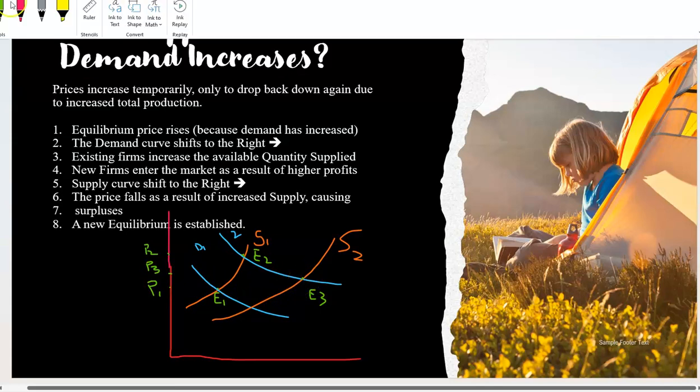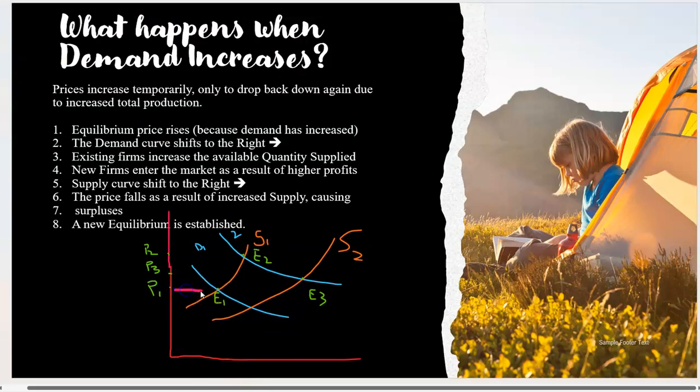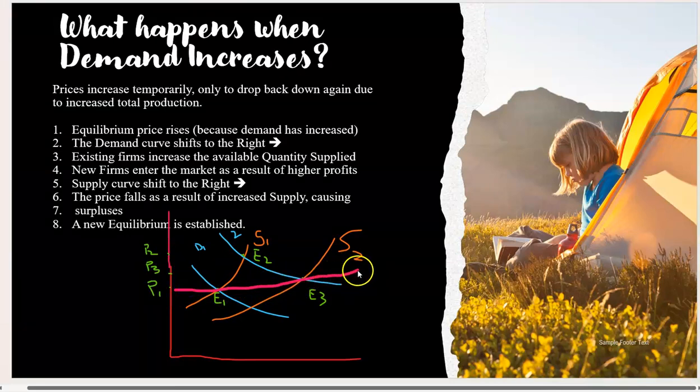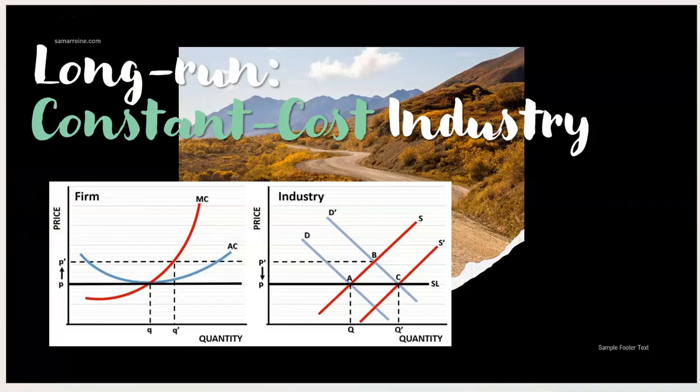So now we have something called the long-run supply curve. The long-run supply curve is going to run from equilibrium one to equilibrium three. So you see how it's upward. It's moving up. When you go from equilibrium one to equilibrium three, equilibrium three is higher. And because you have an upward or upswinging long-run supply curve, this is rather an increasing cost industry. In the long run, there are three types of cost industries. You have constant cost. You have increasing cost. You have decreasing cost.